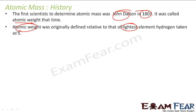At that time, atomic mass was defined relative to the lightest element, hydrogen. They took 1 as the atomic weight for hydrogen, and found the atomic mass of other elements relative to hydrogen — for example, oxygen was given some number relative to hydrogen.